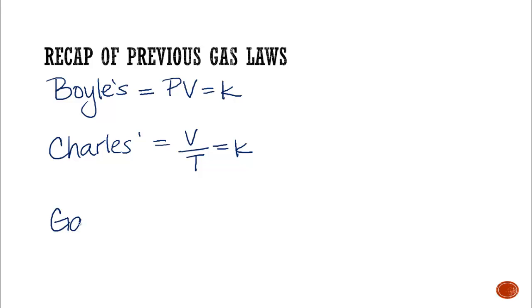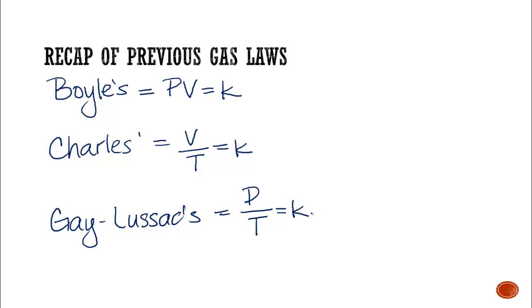And then we finished with Gay-Lussac's Law. Gay-Lussac's Law said we had P over T, and it was also equal to K. Since they're all equal to K, K would be the same for any gas that's the same. So if we were looking at oxygen, Boyle's, Charles', and Gay-Lussac's K is all going to be the same.